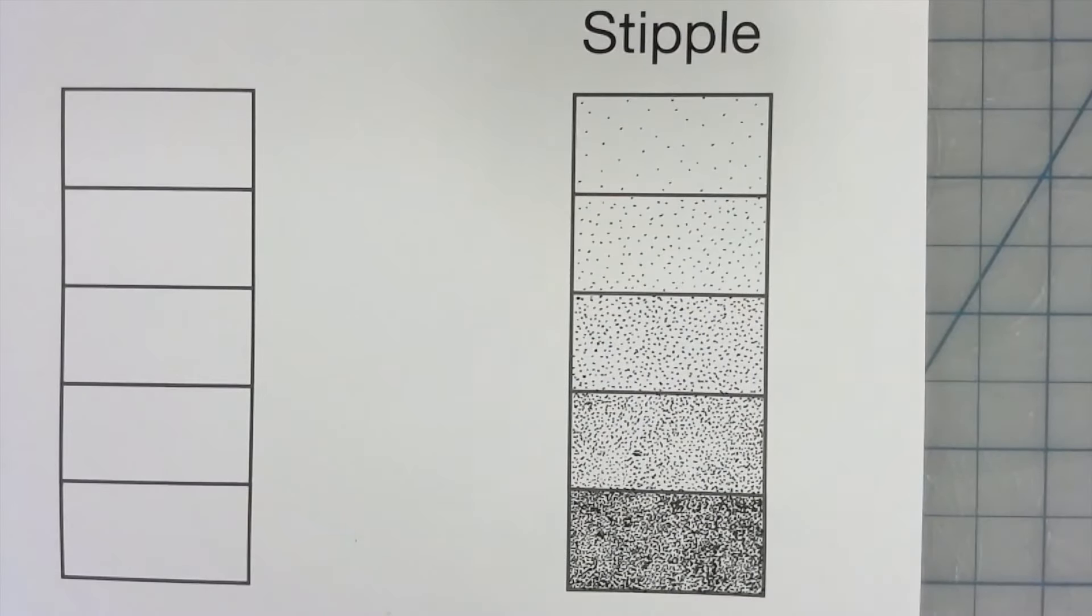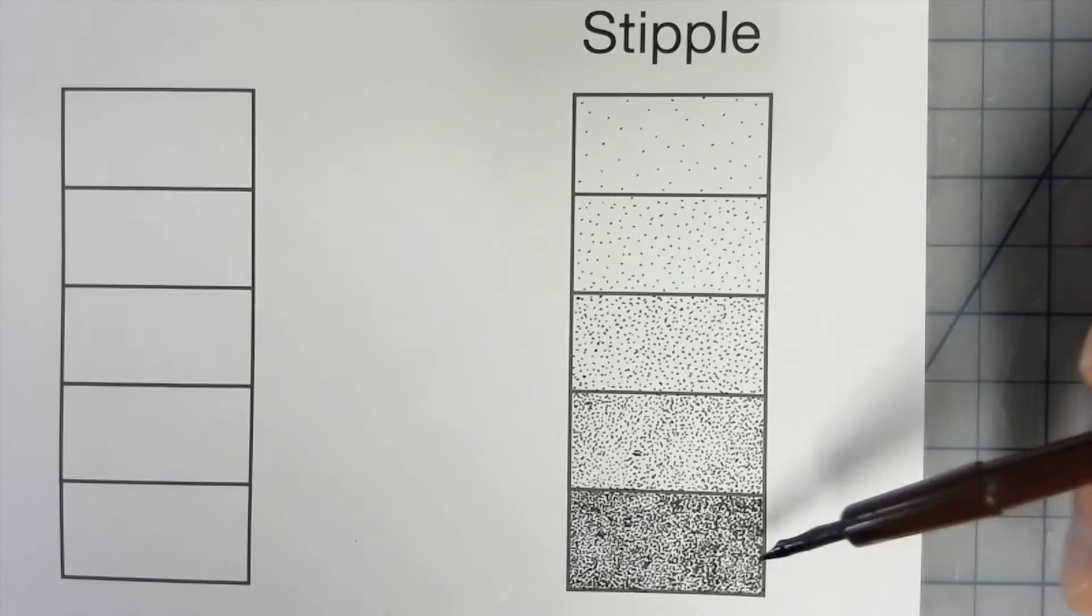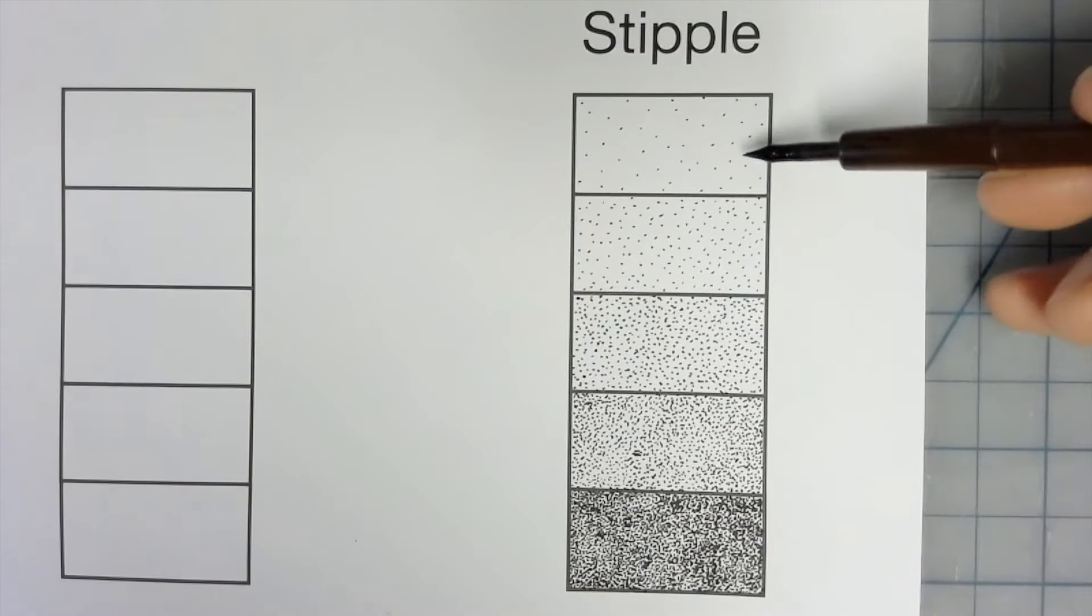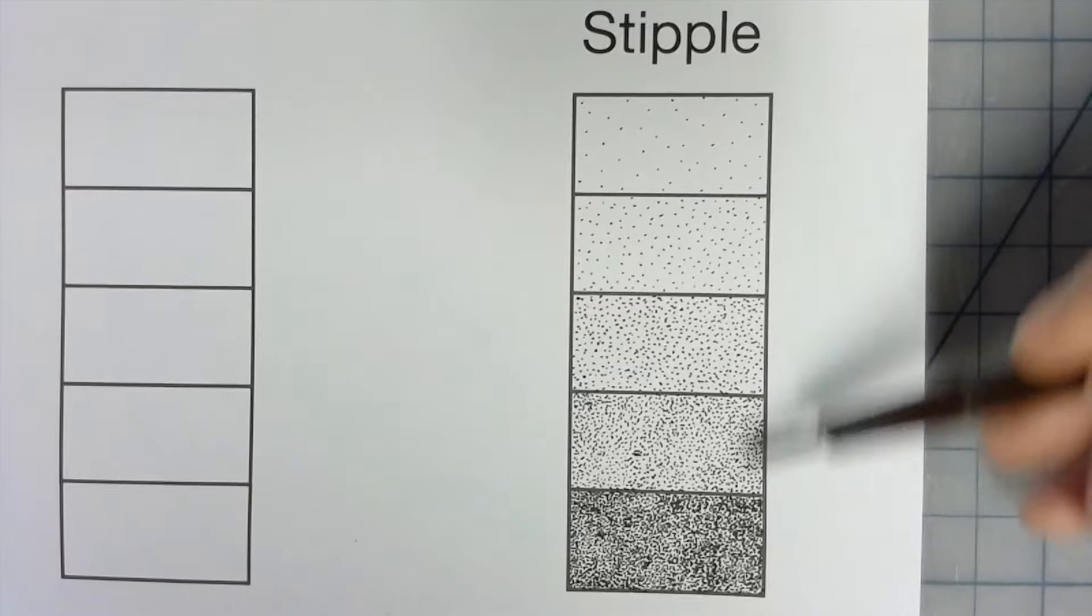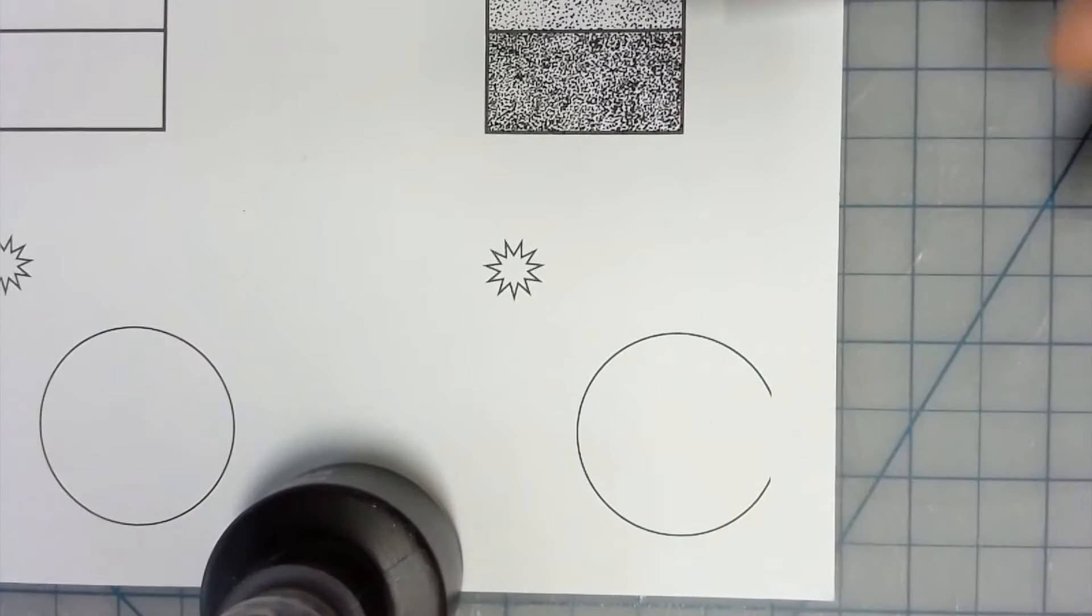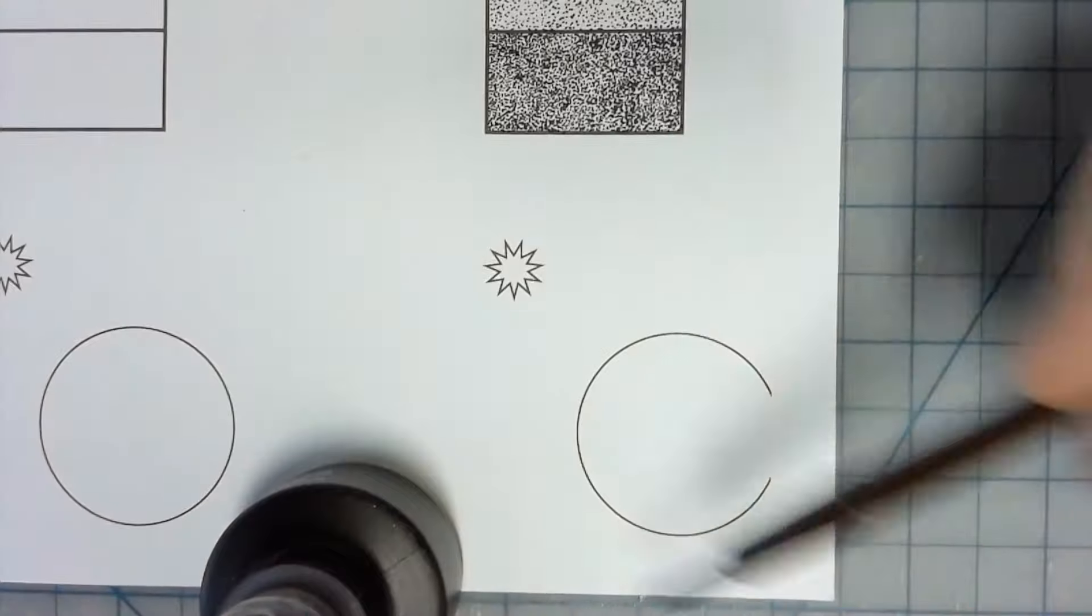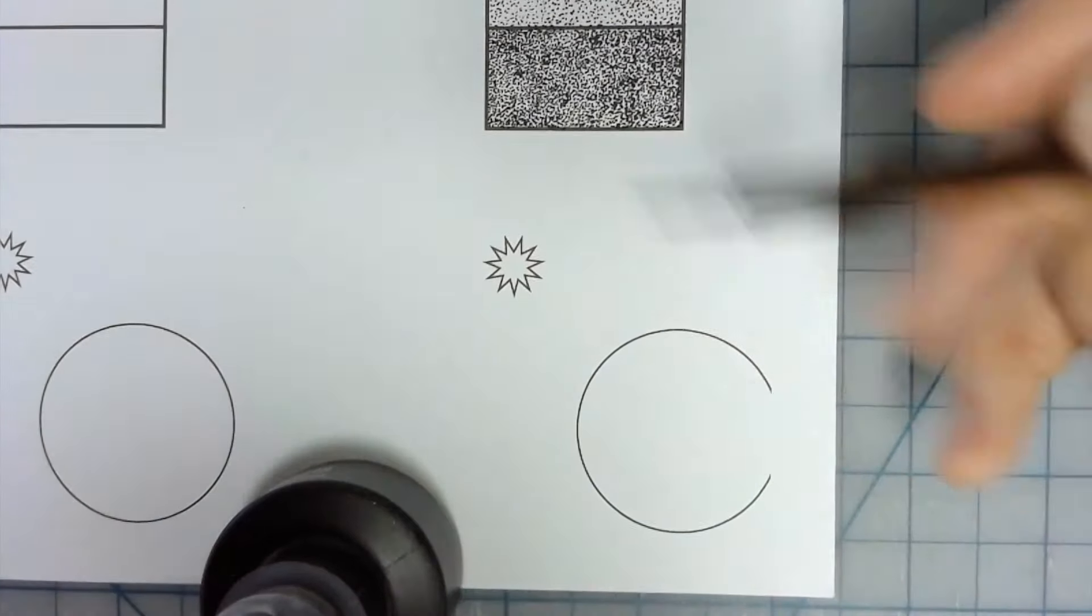Now that my value scales are done, I should be able to notice quite a bit of difference between the top rectangle and the bottom rectangle. Of course, noticing differences in between each one. Next, we want to take this idea of stipple that we just worked with in our value scale, and make this circle look like a sphere.